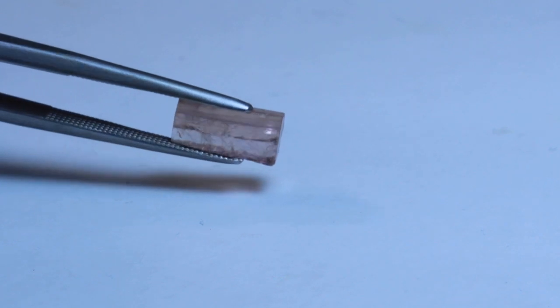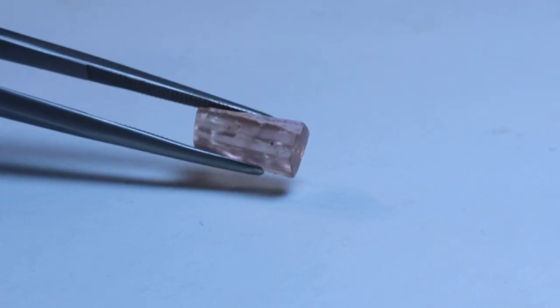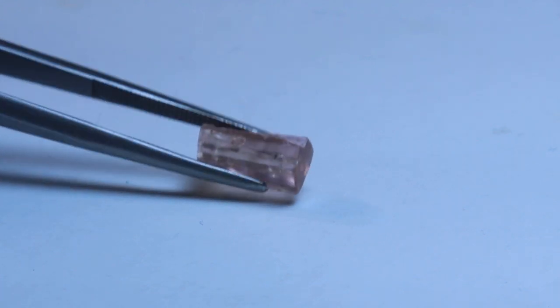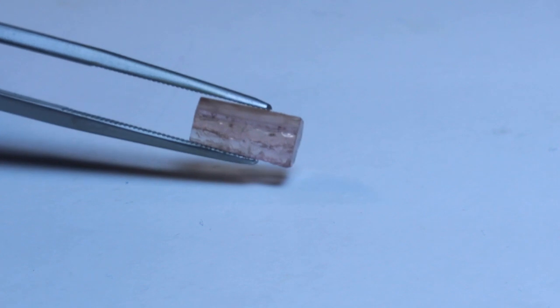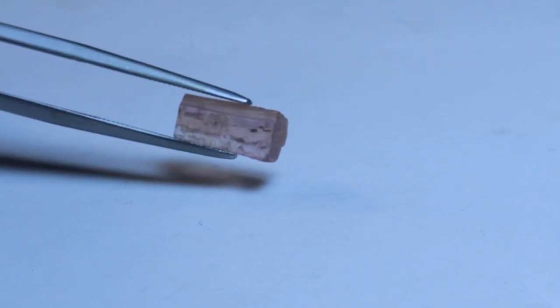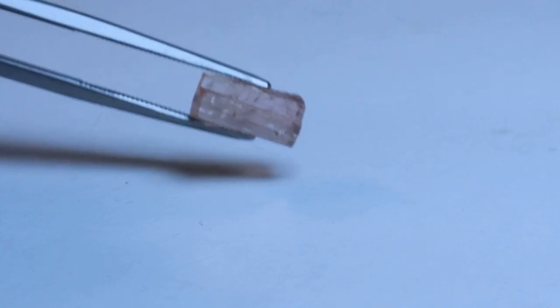This rough is small, weighing in at three and a quarter carats, and it looks well-shaped for a rectangular-shaped design. There are some issues with the rough that I'll have to work through to get an internally clean gemstone, but it's doable. I am looking forward to faceting this pink topaz, so wish me luck.